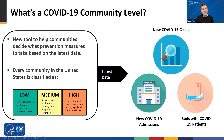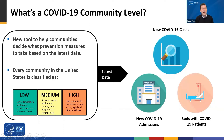Using these data, the COVID-19 community level for each county across the U.S. is classified as low, medium, or high. As you can see on this slide, they're designated using a color-coded scheme as green, yellow, and orange, respectively.